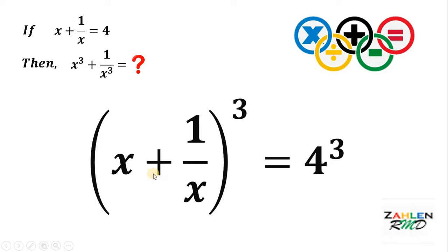Take note that x plus 1 over x raised to 3 is not equal, definitely not equal to x cubed plus 1 over x cubed. Because if we have a plus b quantity cubed, it is equal to a cubed plus 3a squared times b plus 3a times b squared plus b cubed. So, we will use this identity to expand x plus 1 over x raised to 3.